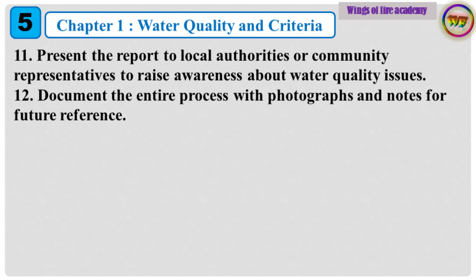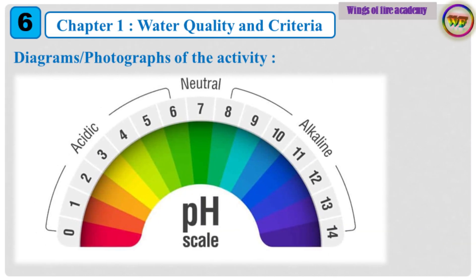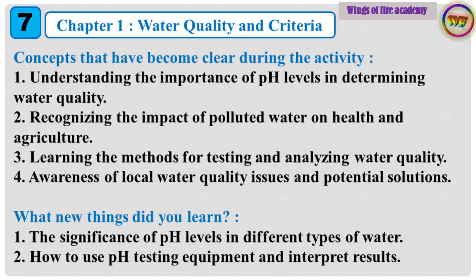10. Make recommendations for improving water quality and managing polluted water sources. 11. Present the report to local authorities or community representatives to raise awareness. 12. Document the entire process with photographs and notes for future reference. Concepts that have become clear during the activity: Understanding the importance of pH levels in determining water quality, recognizing the impact of polluted water on health and agriculture, and learning the methods for testing and analyzing water quality. Awareness of local water quality issues and potential solutions.